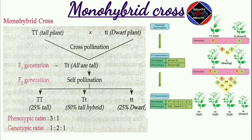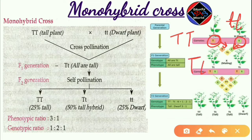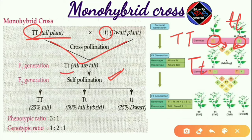These two plants will produce gametes: capital T and small t. When the tall plant (capital T capital T) and dwarf plant (small t small t) are crossed, they produce capital T and small t gametes, which fuse to give capital T small t offspring.